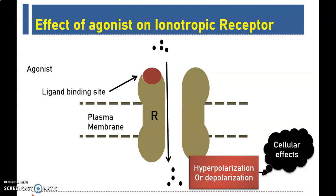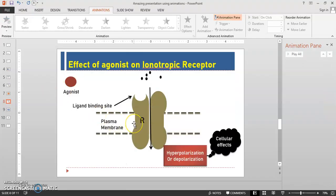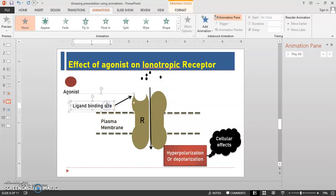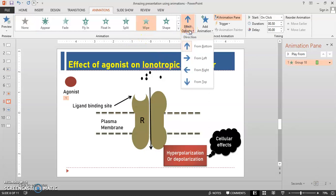Go for the tutorial. Add Animation is the option present inside PowerPoint to add various types of animation. Here I have made available all the necessary parts inside this slide — they are copied from the previous slide to minimize time. So here the agonist, ligand binding site, and all elements are available. The very first thing is that we have to show the ligand binding site. Select the ligand binding site and give the animation as Wipe from the left. Increase the time duration up to one second.